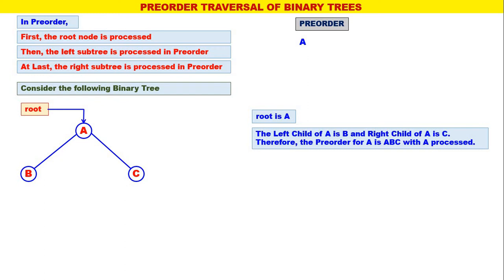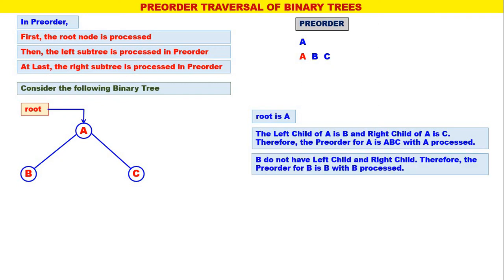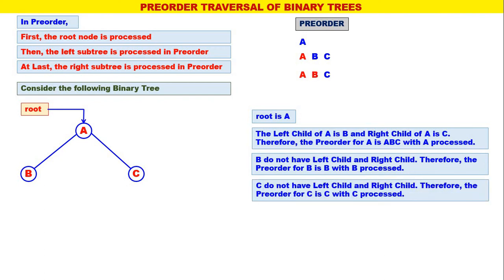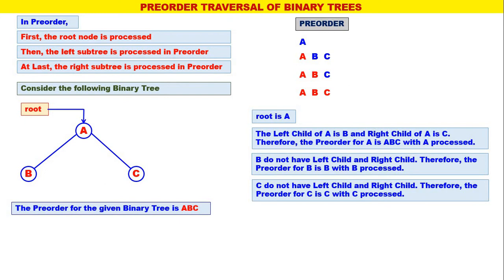First we write a because it is pre-order. With a processed, a is replaced by a, b, c. Next we consider the leftmost blue node, that is b. b does not have a left child or right child, therefore the pre-order for b is b only, with b processed. Next c — c does not have a left child or right child, therefore the pre-order for c is c only, with c processed. Now all the nodes are red, meaning all the nodes are already traversed. Therefore the pre-order traversal for the given binary tree is a, b, c.